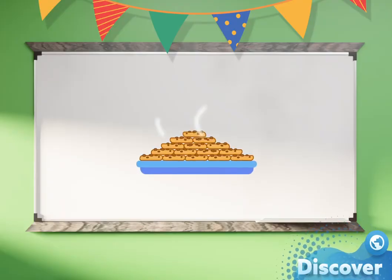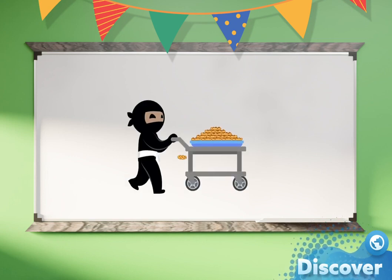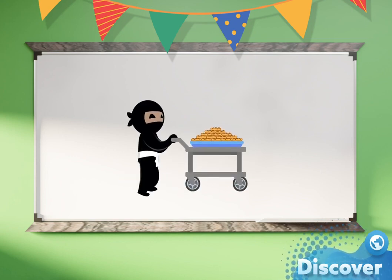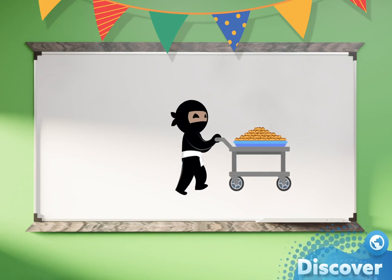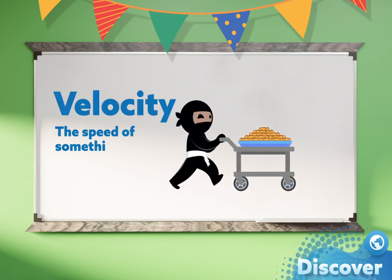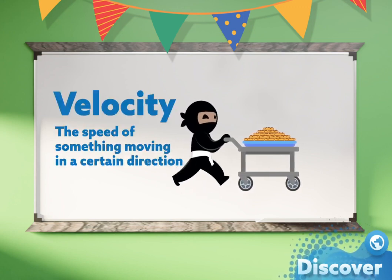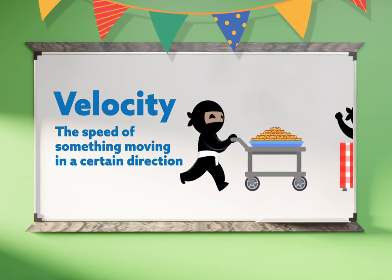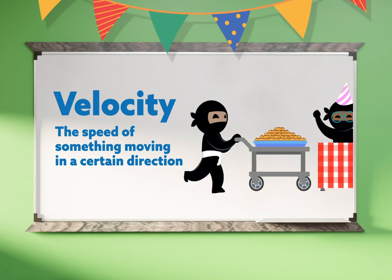Alright, cookies are made! Now let's move them onto the cart and move them onto the table. But don't move too fast! We've got to control the cart's velocity. Velocity is the speed at which something is moving in a certain direction. Aim toward the table and keep our velocity low to ensure our cookies' safe travels.